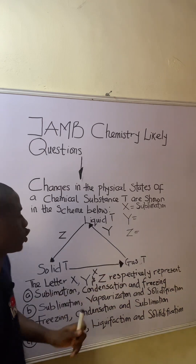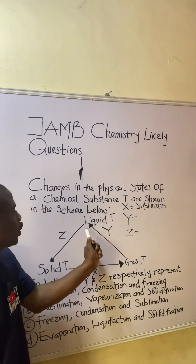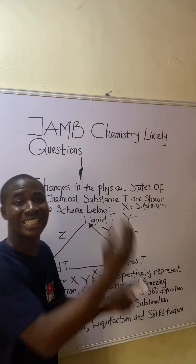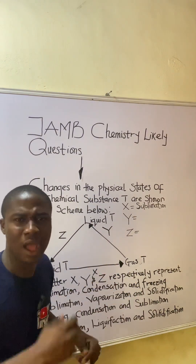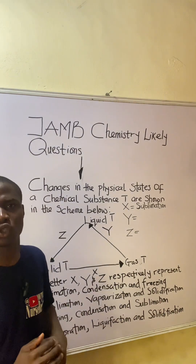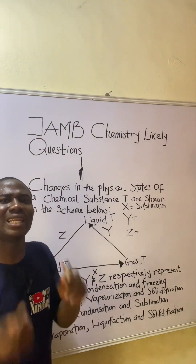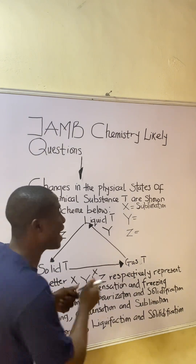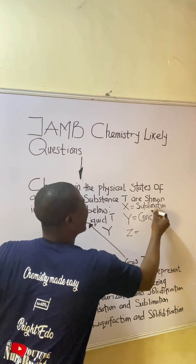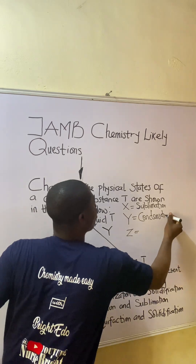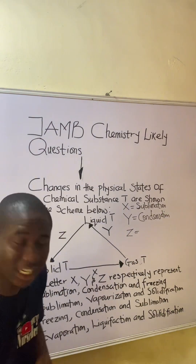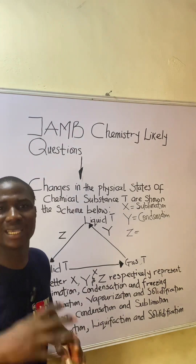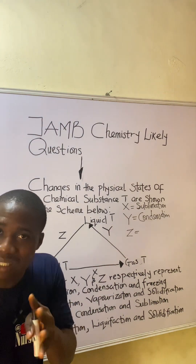Now, Y represents gas changing to liquid — you can see the arrow going towards liquid. A gaseous substance changes to become liquid. This process is called condensation. The gas condenses to later form liquid.